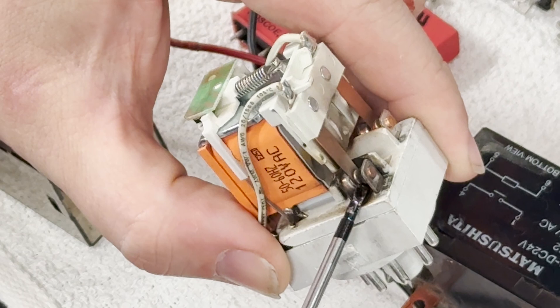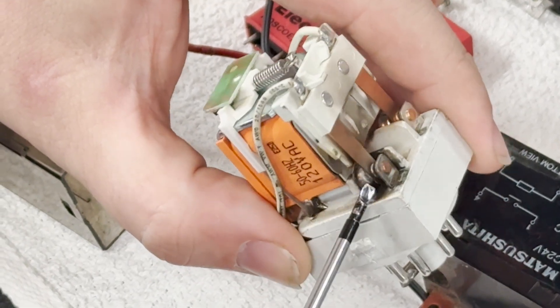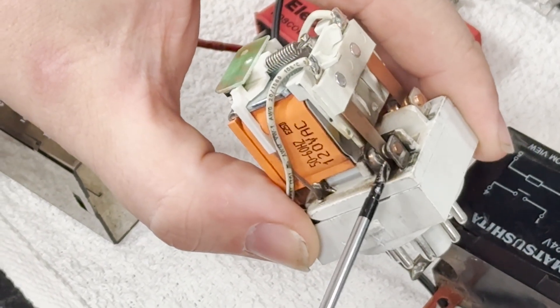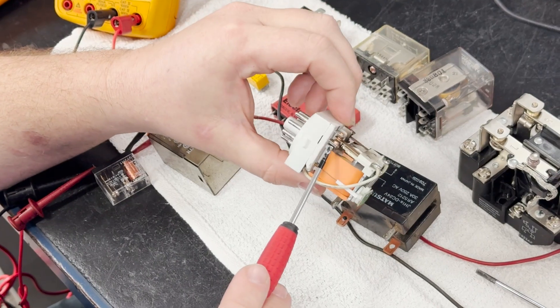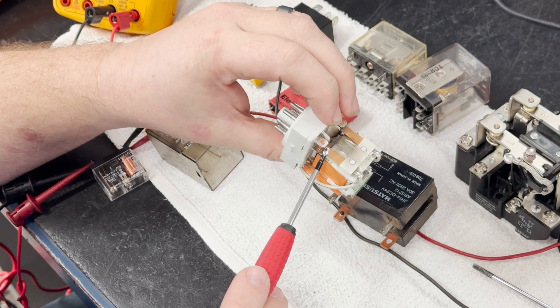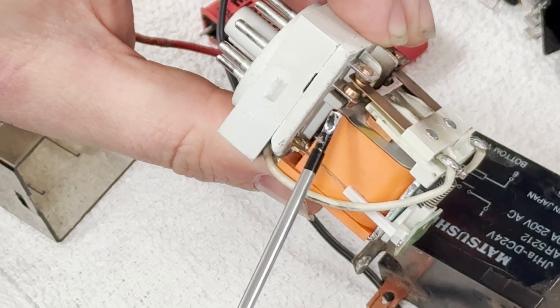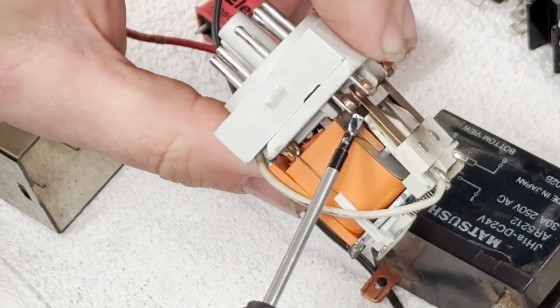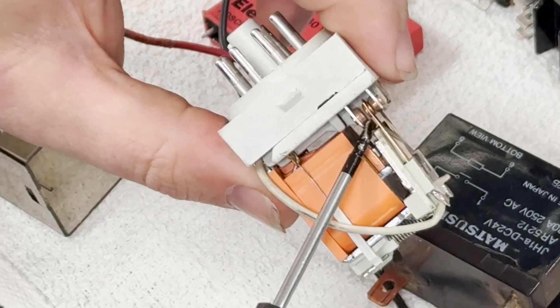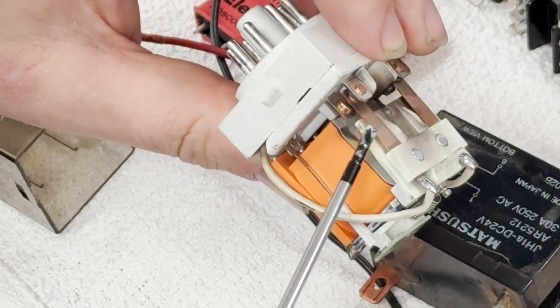This carbon buildup happens from many, many activations of this relay over time and absolutely builds up until it eventually fails. Here on the other side, you can see that this side of the relay is used less frequently, or maybe not at all depending on the customer's application. You can see this set of contacts are relatively clean without any carbon or corrosion on them.